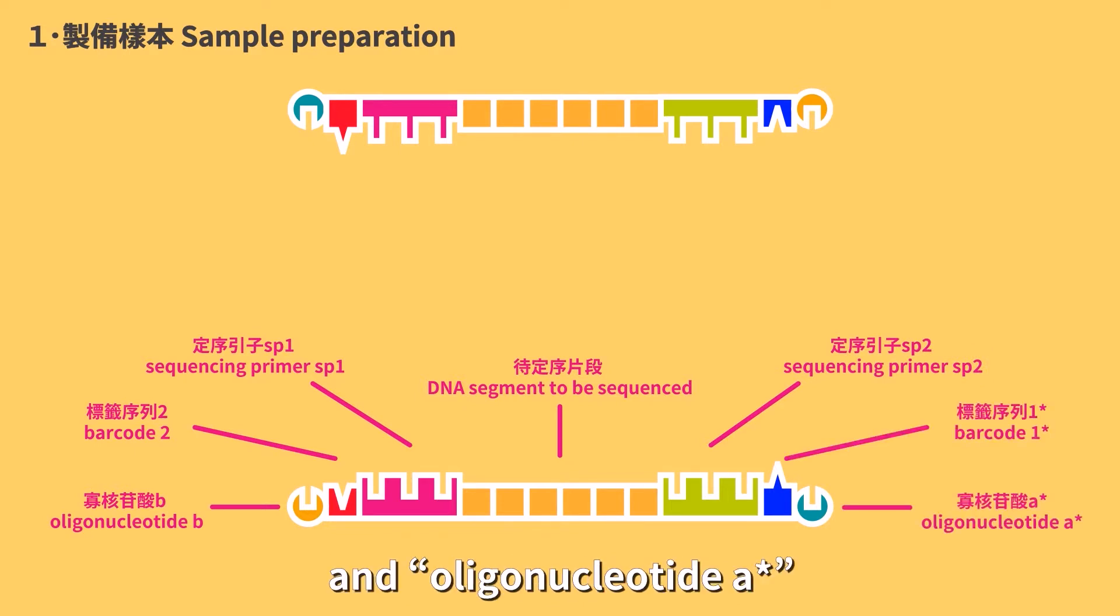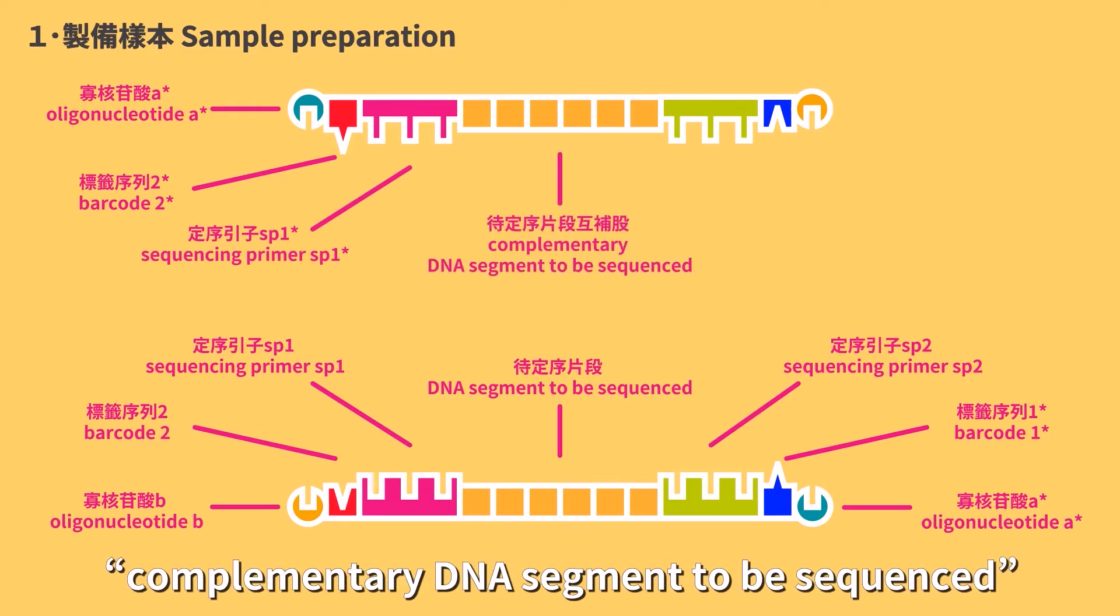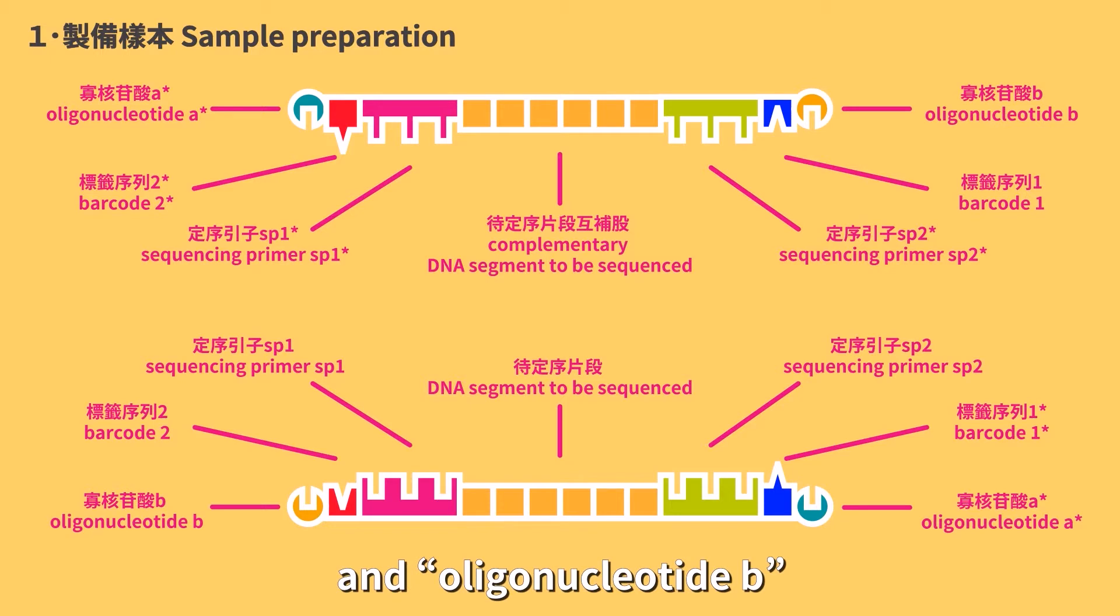and oligonucleotide A star. The other strand should be: oligonucleotide A star, barcode 2 star, sequencing primer SB1 star, complementary DNA segment to be sequenced, sequencing primer SB2 star, barcode 1, and oligonucleotide B.